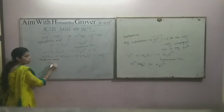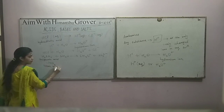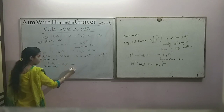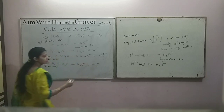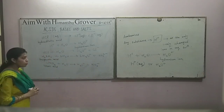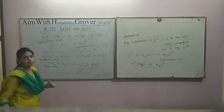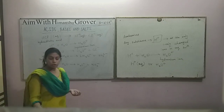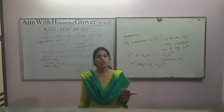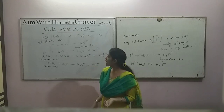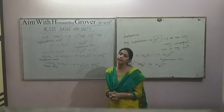Take another example: HNO3, nitric acid. When it combines with a water molecule, it forms H3O+ — hydronium ion — and NO3- — nitrate ion. It also produces H3O+ ion, hydronium ion. Therefore, nitric acid is also an acid. So, any substance which produces H+ ion or H3O+ ion — hydrogen ions and hydronium ions — in aqueous solution is called an acid.